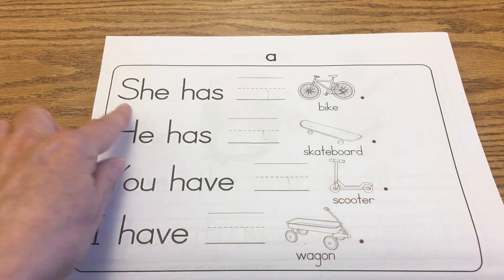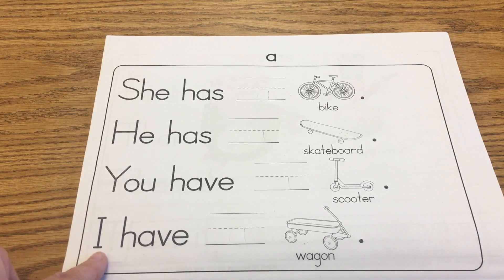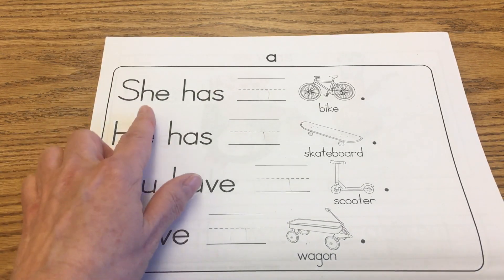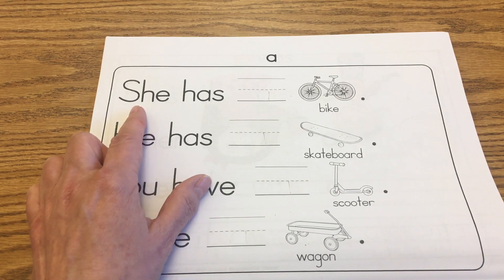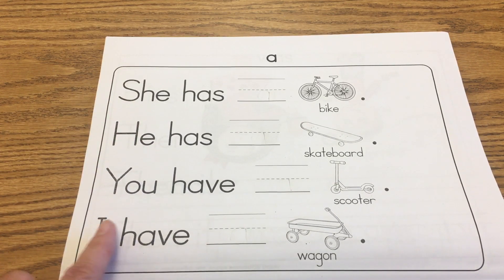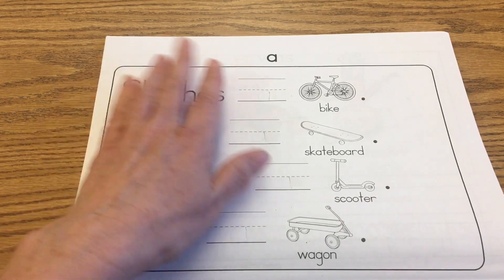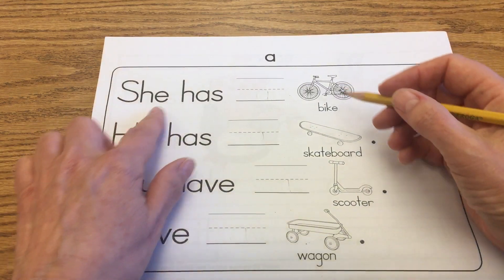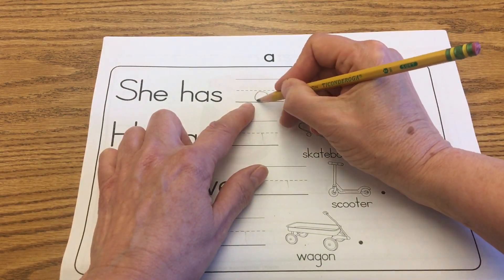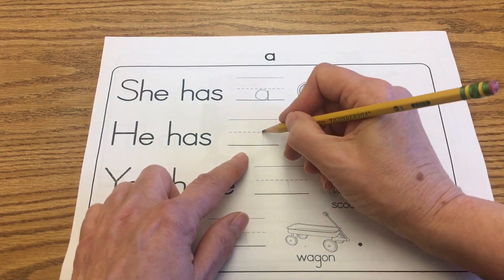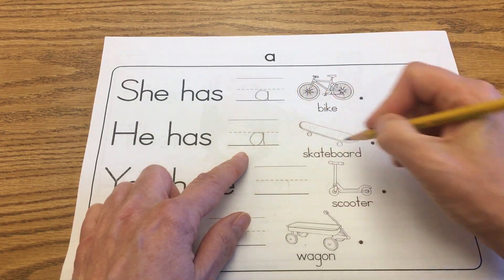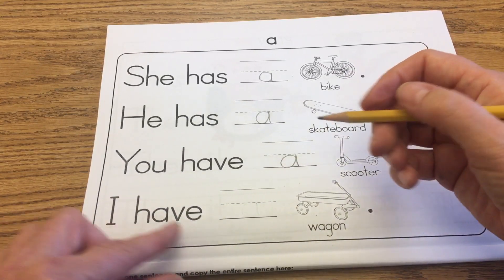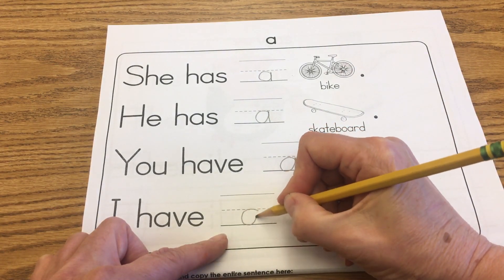This is A. We also have the words she, he, you, and I. We also have have and has. Notice that there are capital letters at the beginning, finger spaces in between the words, punctuation at the end, and it's a complete thought. So: she has a bike, he has a skateboard, you have a scooter, I have a scooter, I have a wagon.